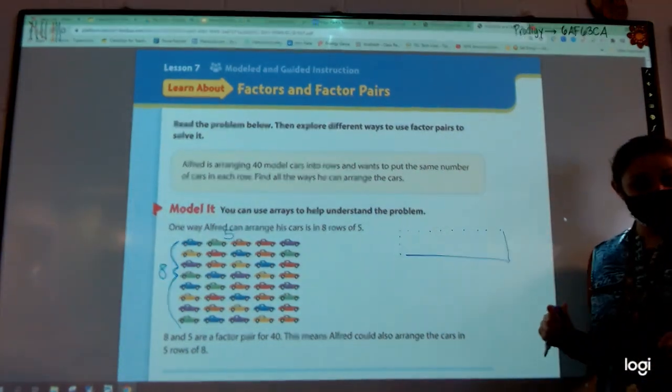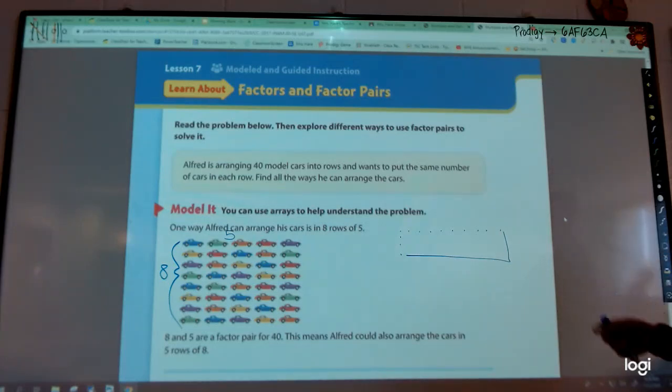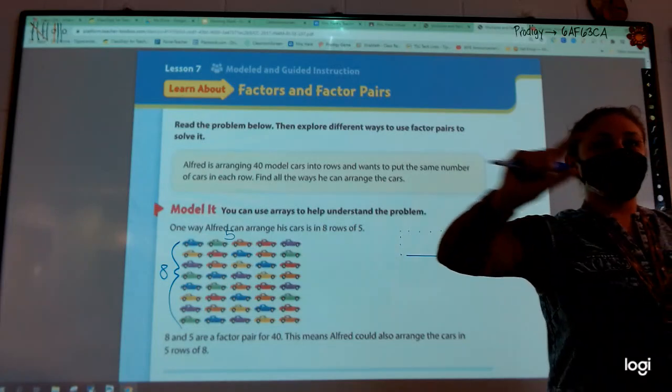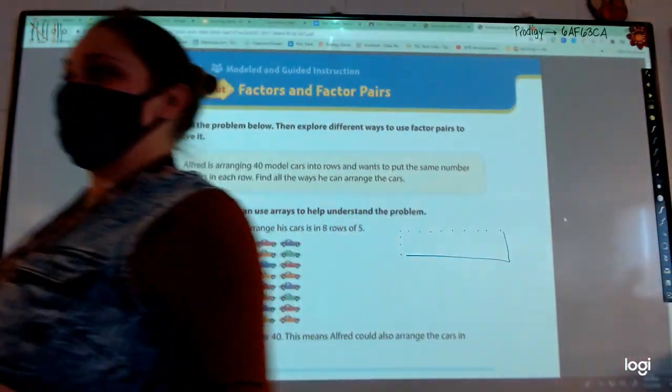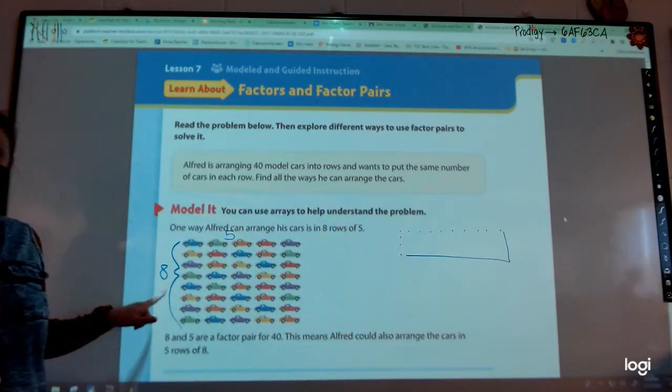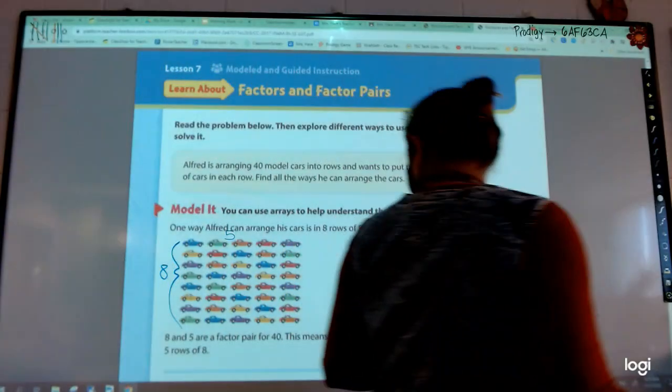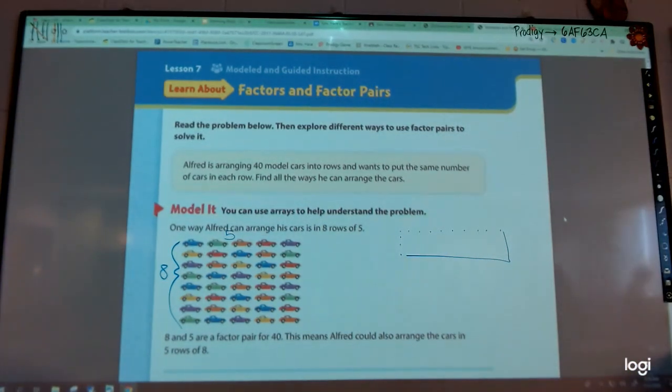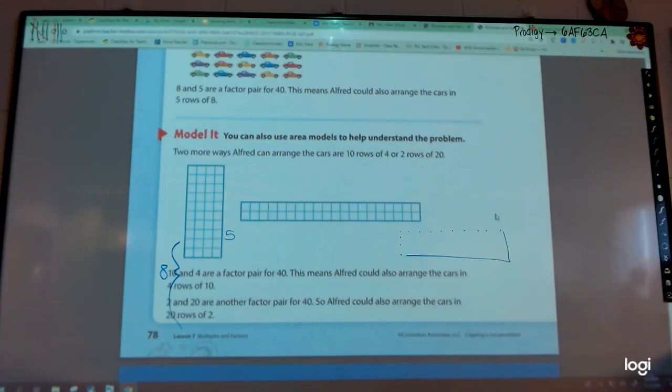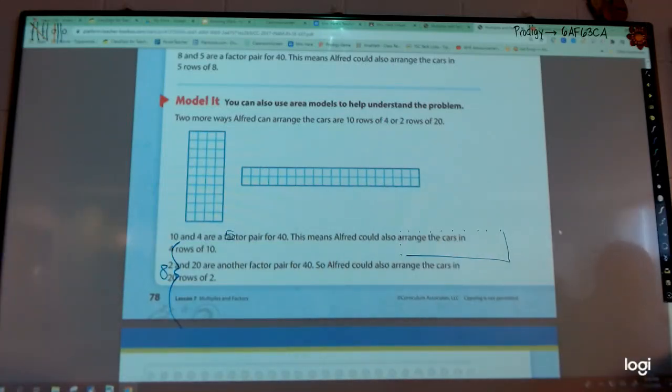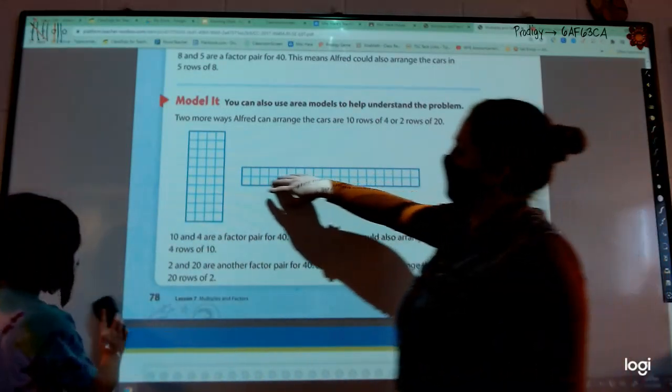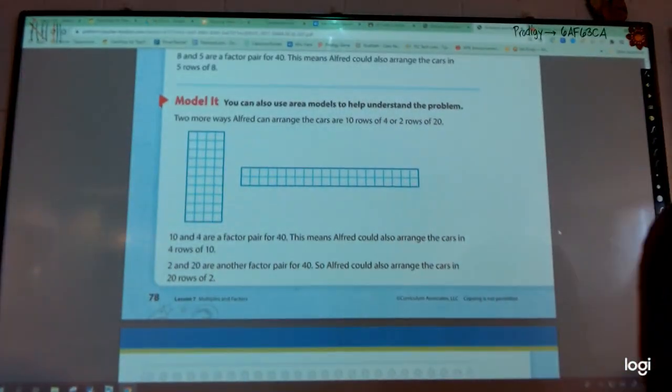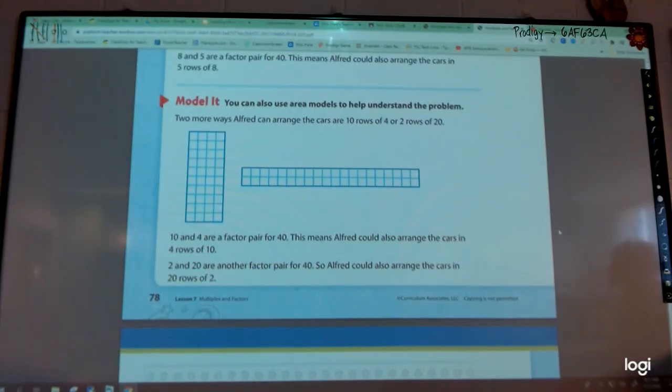Could I do one really long row of 40 cars? I could do that. I know we're not quite down there yet. So all of those pairs that will equal 40, we already know those are called factors. That is what today's lesson is all about. So I am going to have Hayden erase my board and I'm going to scroll down my screen.